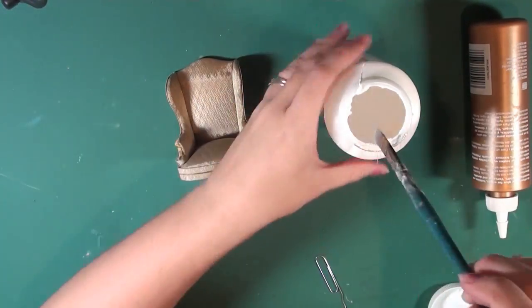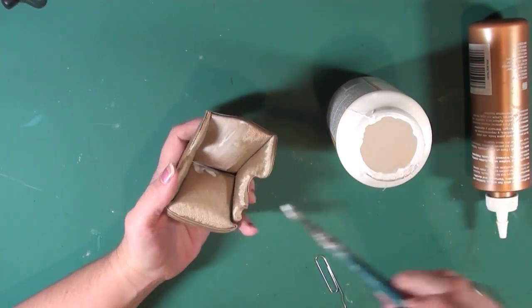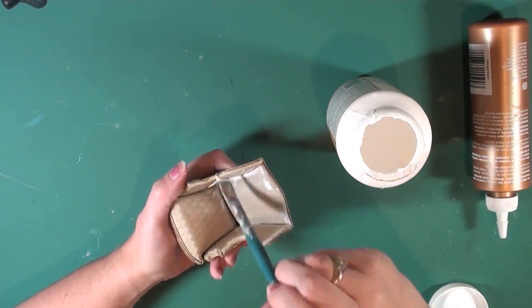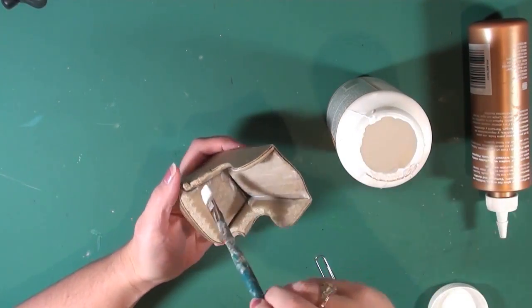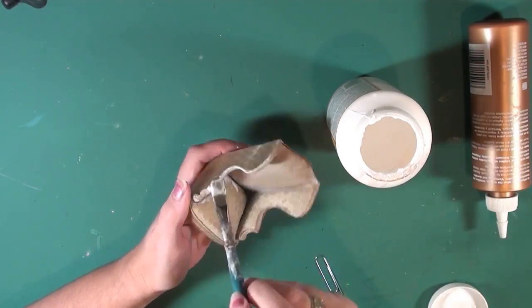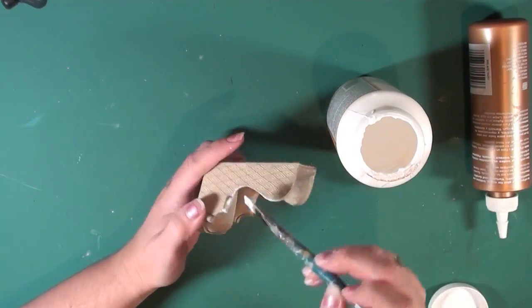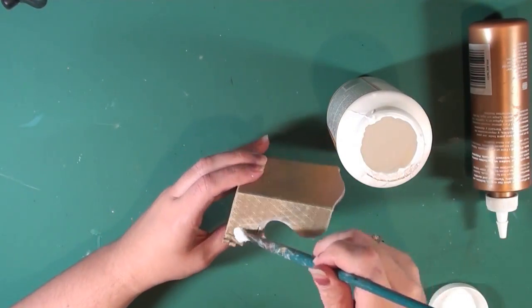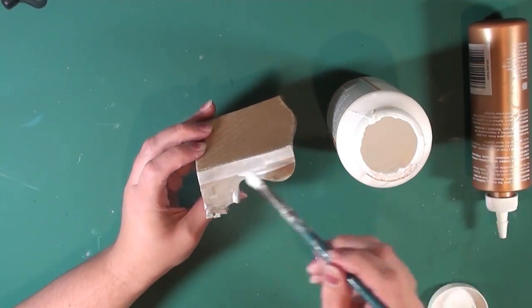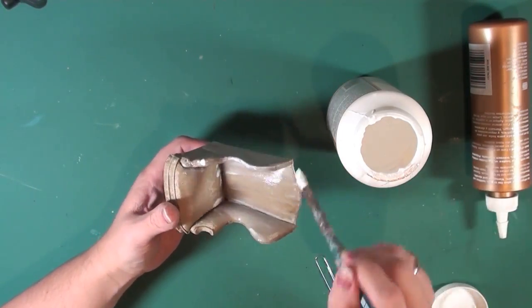I'm going to first take the Mod Podge and I'm going to paint it over all of the fabric. And this is going to start to give me more of a leather feel and look than a fabric look. This is going to seal all the fabric. This is also going to be helpful whenever I start putting on my coats of paint because the paint's not going to soak into the fabric or into the batting that's already inside the chair.